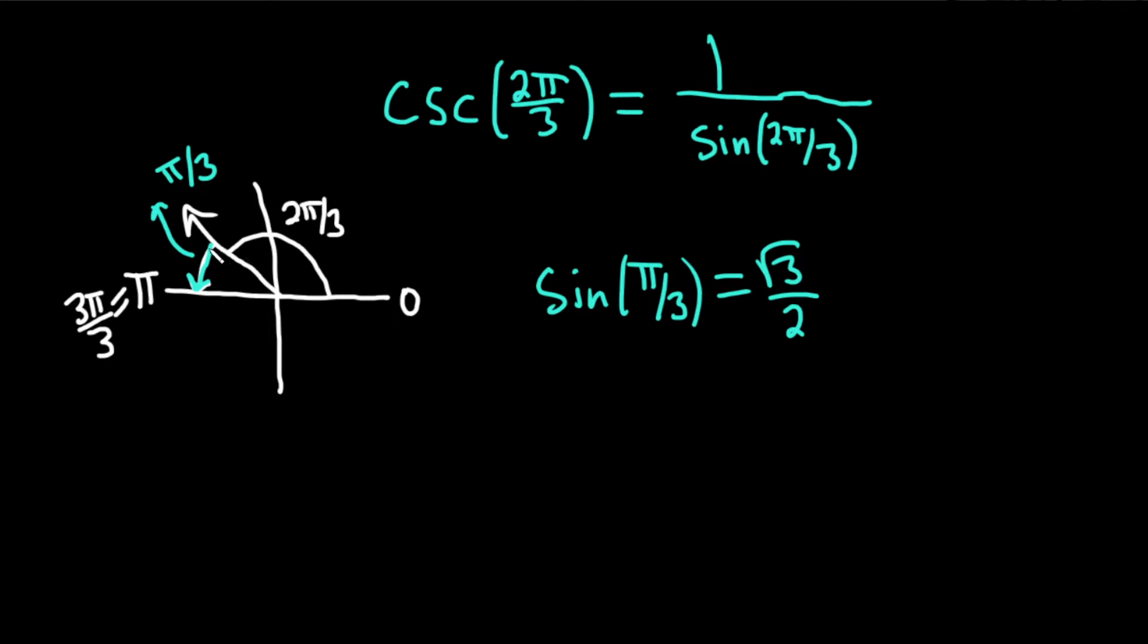Recap: You first draw your angle, find its reference angle, which is the positive angle made with the terminal side of your angle and the x-axis. It's easy to see it's π over 3 because if you subtract 3π over 3 minus 2π over 3, you get π over 3. You get the sine of π over 3. And again, the trig function values of an angle and its reference angle are the same except for possibly a sign issue. So how do we resolve the sign issue?